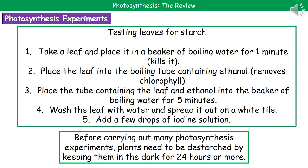Then take the leaf and place it in a boiling tube containing ethanol. The idea is that it removes all the chlorophyll — the green pigment — from the leaf. You'll notice the ethanol becomes slightly green and the leaf fades. The third step is to place the tube containing the leaf and ethanol into a beaker of boiling water for five minutes. You are not going to hold that tube over an open flame — the ethanol is flammable, so use a beaker of boiling water instead because it's safe.